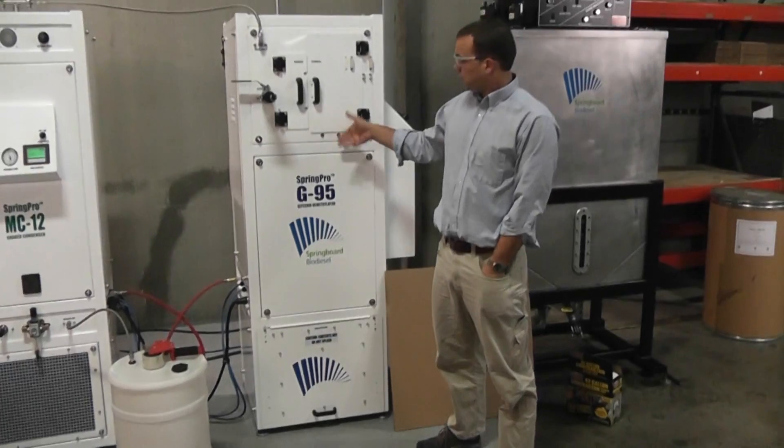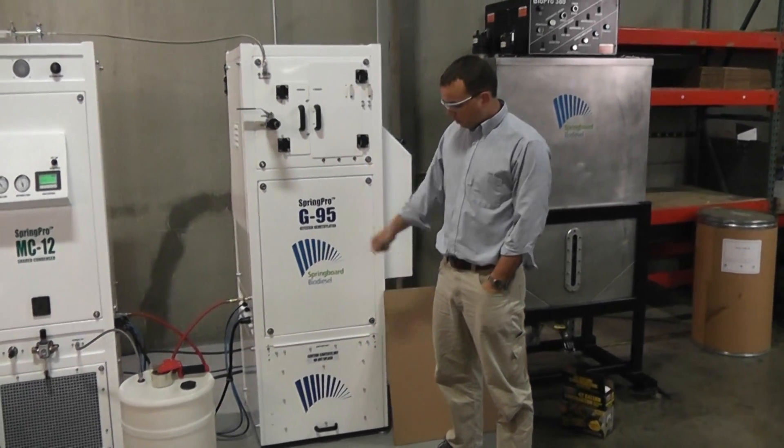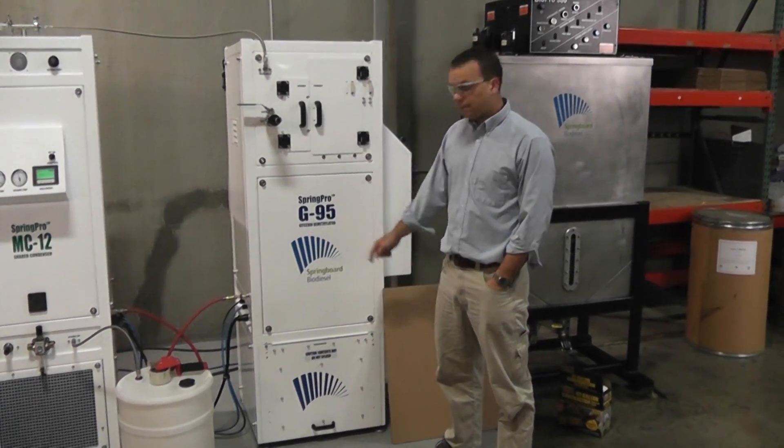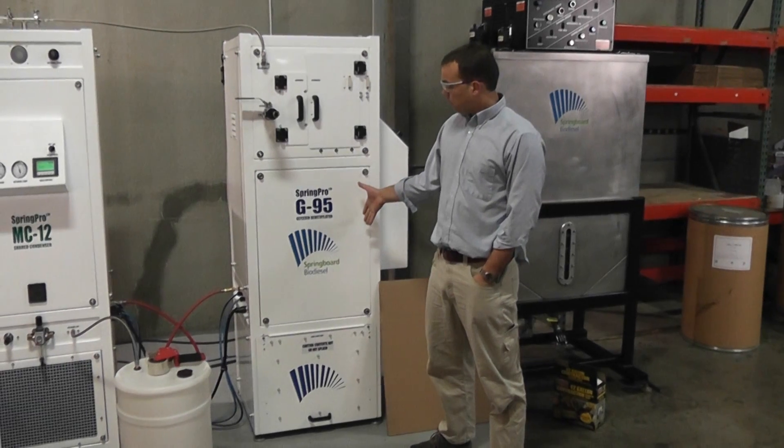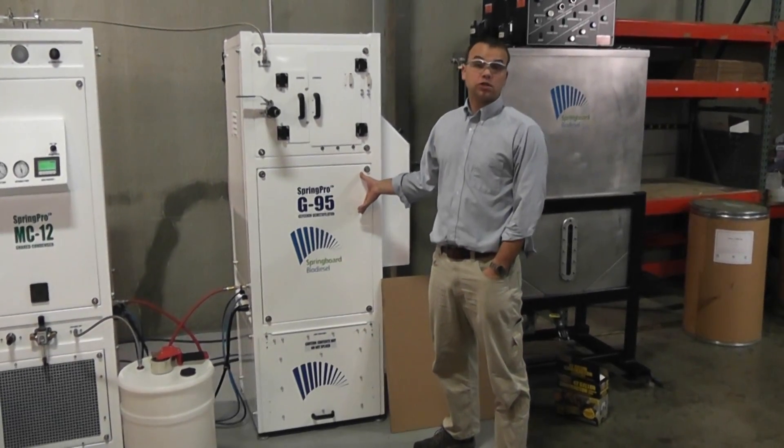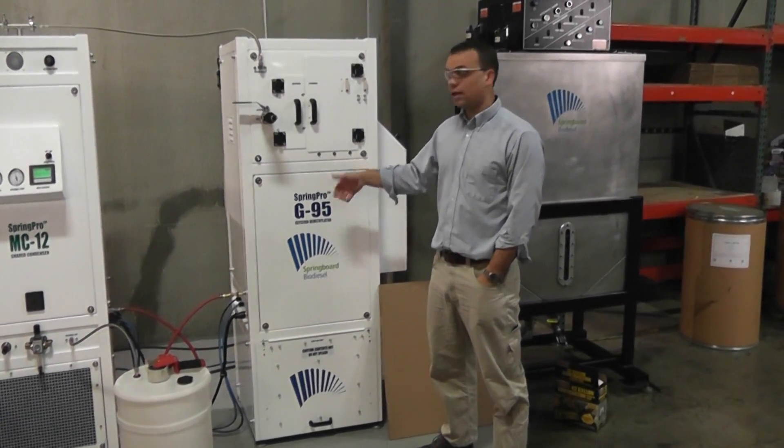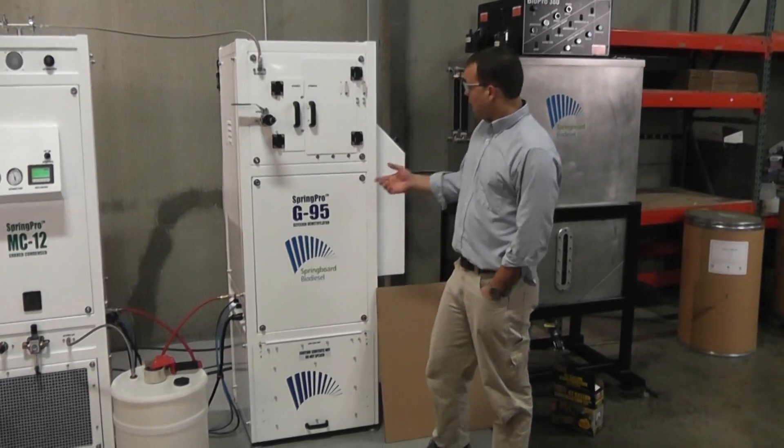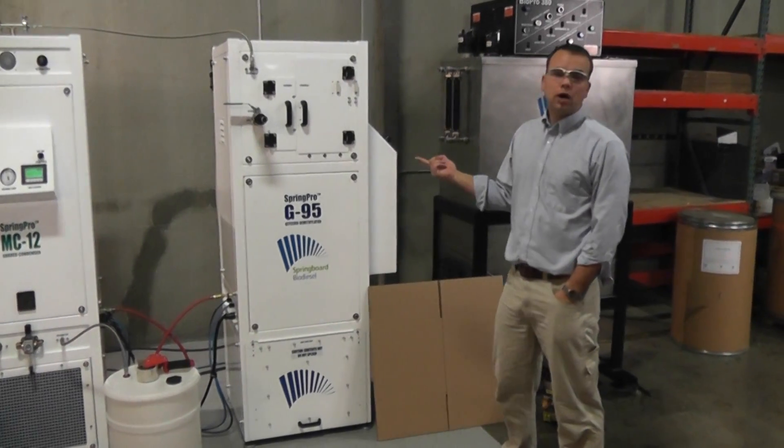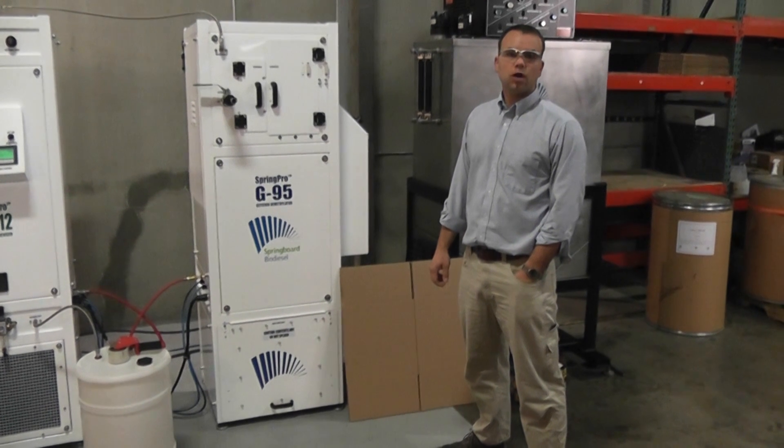Now when it comes time for the G95 to expel the saponified glycerin into that box, this machine will check to make sure there's a box there before it lets any drain out. For this batch of glycerin, we're actually going to need two boxes, so I'll end up taping up a second one and having that ready to go as well.